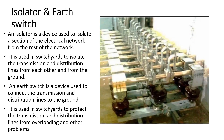An isolator is a device used to isolate a section of the electrical network from the rest of the network. It is used in switchyards to isolate the transmission and distribution lines from each other and from the ground. An earth switch is a device used to connect the transmission and distribution lines to the ground, protecting them from overloading and other problems.